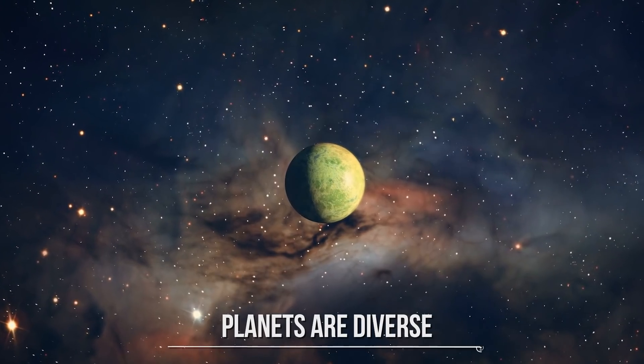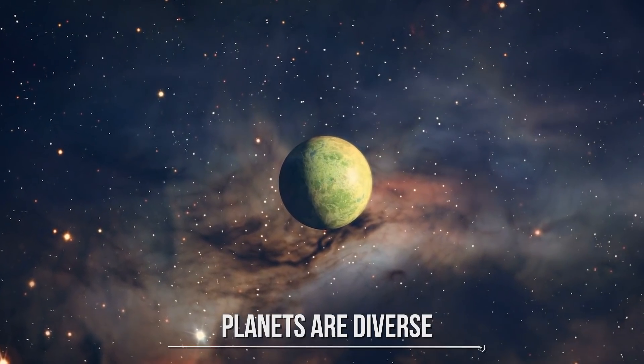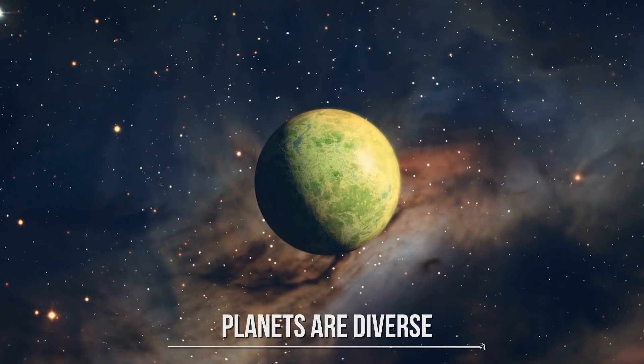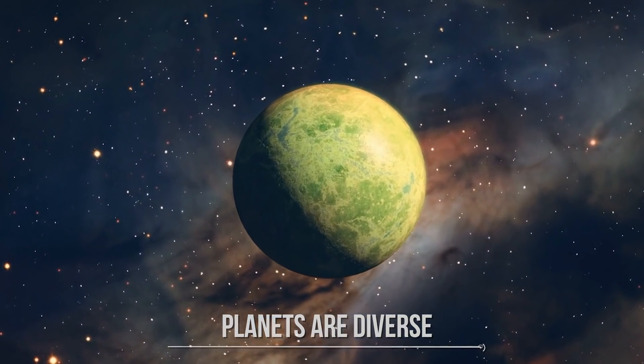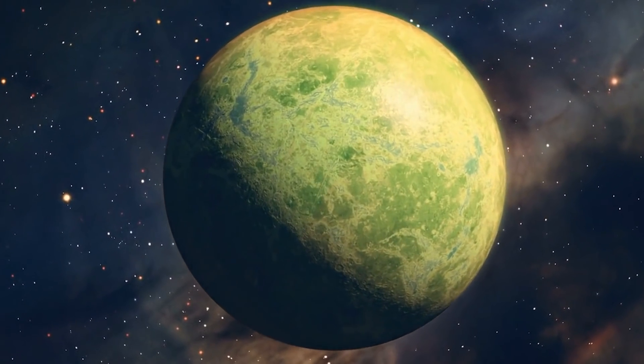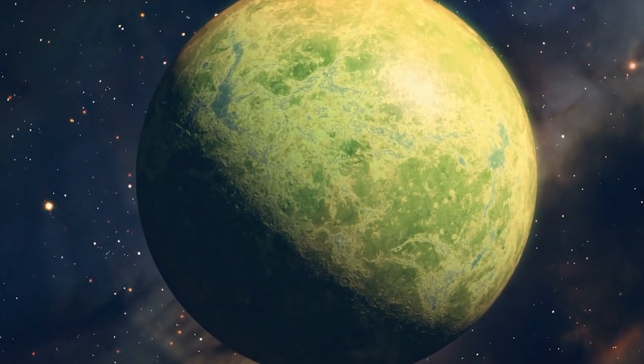Planets are diverse. Kepler has discovered a diversity of planet types, opening our eyes to new possibilities. The most common size of planet Kepler found doesn't exist in our solar system. A world between the size of Earth and Neptune, and we have much to learn about these planets.